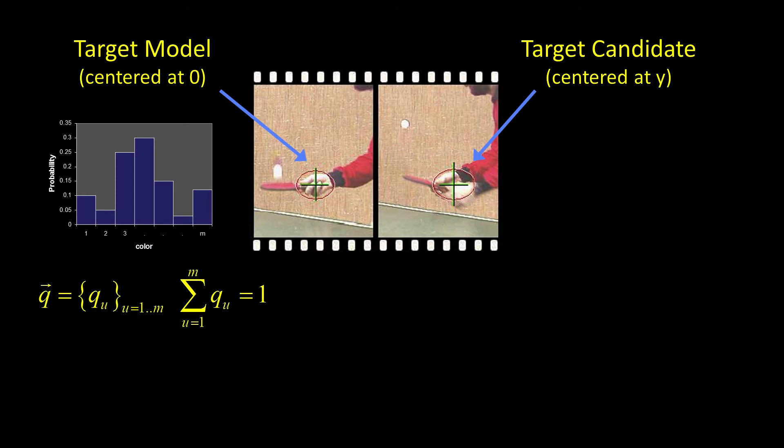So on the left we have our initial distribution. This was our histogram that we computed in our area, and it's typically called q. q's got a set of bins u1 through m, and because it's going to represent a density, we enforce the fact that the sum of them equals one. So how do we do that? We just sum them all up and divide all the bins by that value.